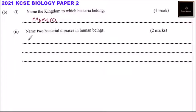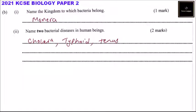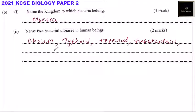There are quite a number of bacterial diseases, so you just need to mention two. For example, you can say cholera — that is a bacterial disease. You can also say typhoid — that is another bacterial disease. You can say tetanus, or tuberculosis.